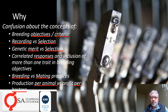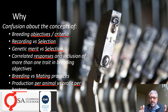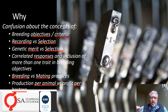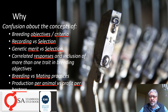There's confusion about certain concepts — the concept of breeding objective criteria. Recording versus selection: the fact that you measure something doesn't necessarily mean that you're going to select for those traits or properties; you can actually select against them, or you can change your selection program so that you just keep everything as is. And that also goes to the next point: genetic merit versus selection.